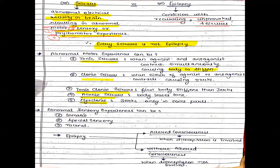So first, why is it called stiffening? Just like rigidity, agonists and antagonists contract simultaneously. Whenever agonists and antagonists contract simultaneously, that causes the body to stiffen, and this is called a tonic seizure.